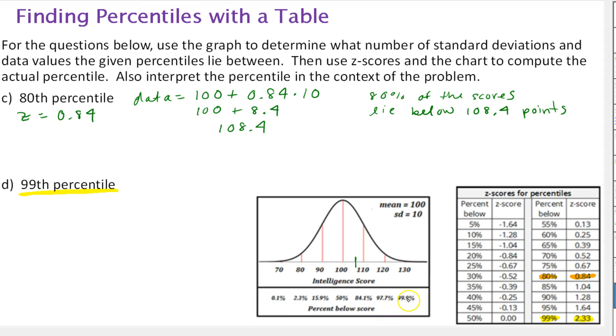So 99%, we know that three standard deviations is 99.9, two is 97.7. So this is going to be between 120 and 130. The z-score that corresponds is 2.33.